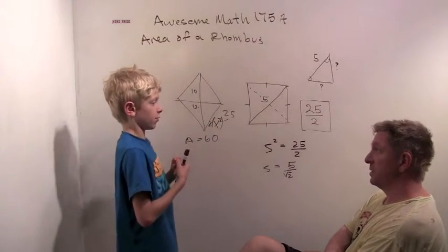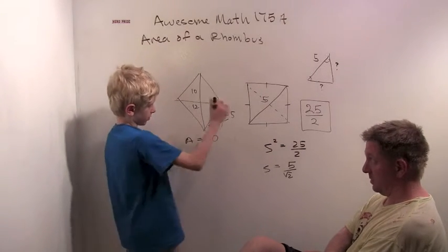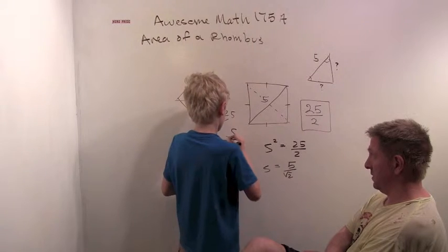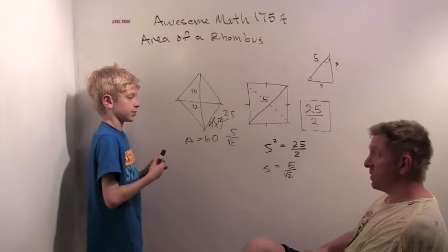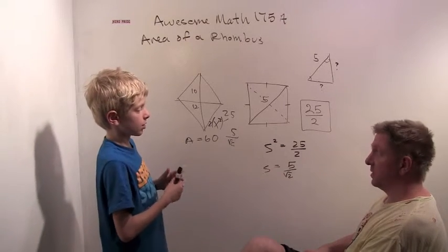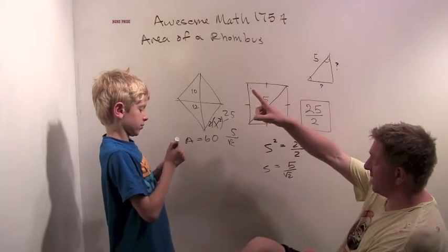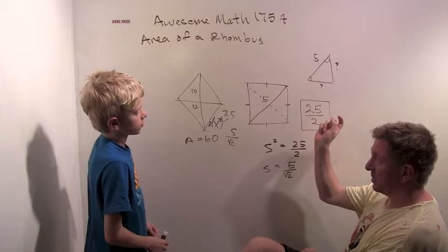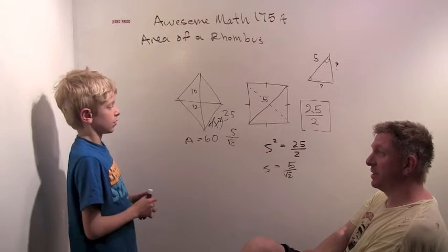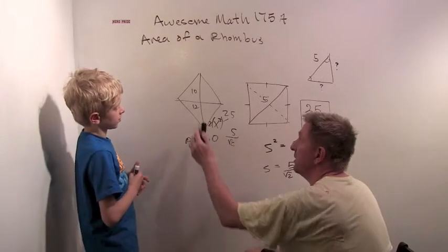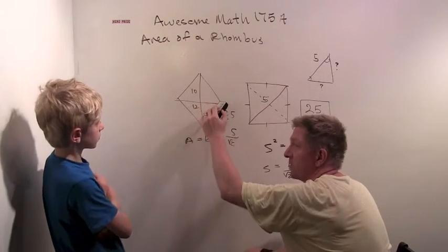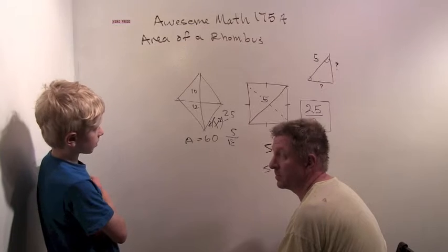Two times something squared is 25. So what does that something squared equal? That something squared is 25 over two. Right. So then this is five over two. This is what we got before. Okay. So it's a really nice formula to know. That the area of a rhombus is diagonal one times diagonal two divided by two. Or the height of one of these triangles times the base of one of those triangles times two. Either way.